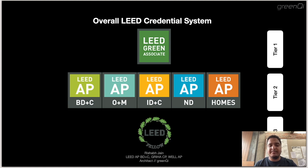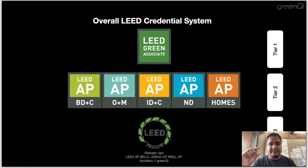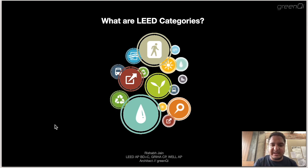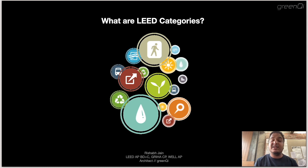LEED AP O+M is typically pursued post-construction when you want to work towards a LEED rating for an existing building. The third-tier credential is the LEED Fellow. To be eligible, a nominee must hold a LEED AP with specialty credential for a minimum of eight years and demonstrate a minimum of 10 years of exceptional impact with LEED in four out of five mastery elements. Personally, I have cleared the LEED Green Associate exam and the LEED AP BD+C exam.